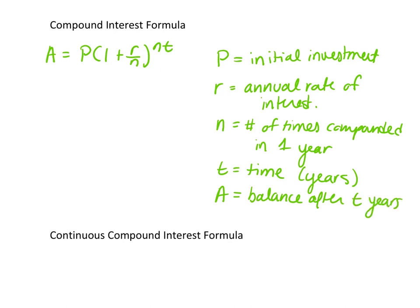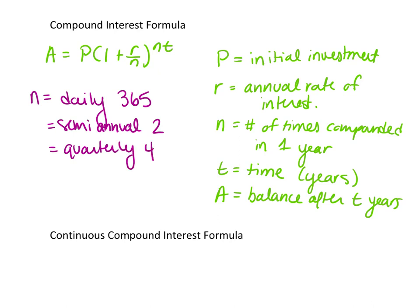So our n values could be daily, so 365, could be semi-annual, that would be 2, quarterly, that would be 4, and monthly, 12. These are the most common.